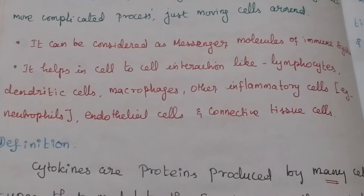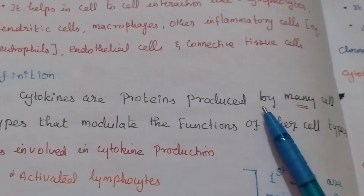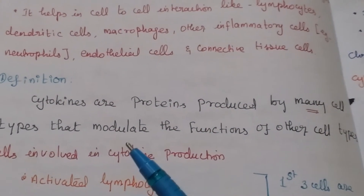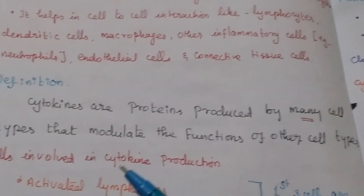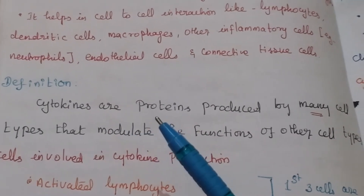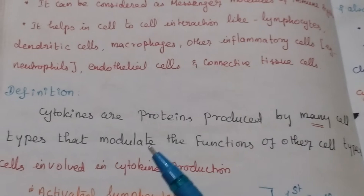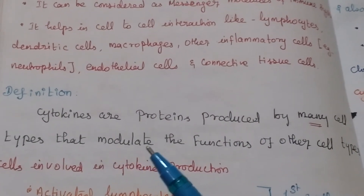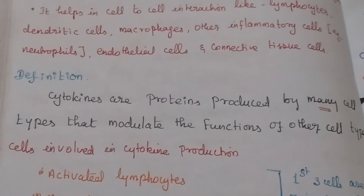How can we define cytokines? Cytokines are protein molecules produced by many cell types that modulate the function of other cell types.